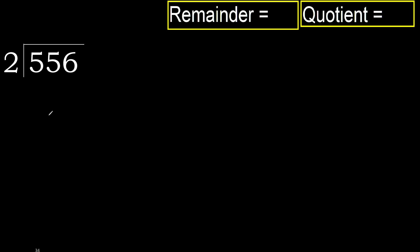556 divided by 2. 5 is not less. With 2, which number multiplied is nearest to 5 but not greater? 2 multiplied by 3 is 6 — 6 is greater. 2 multiplied by 2 is 4 — 4 is not greater.